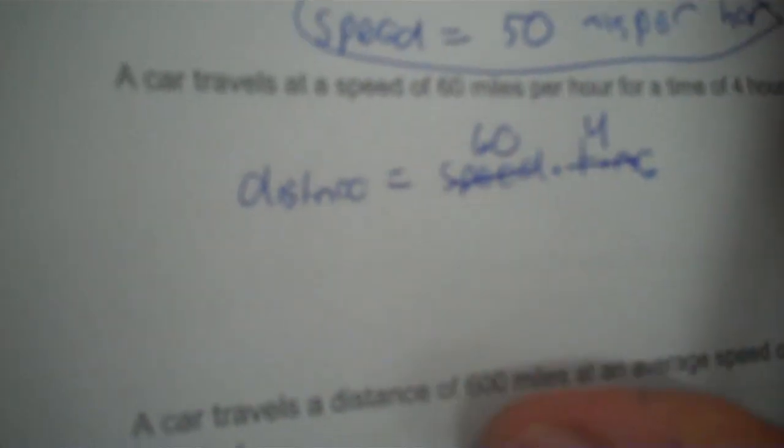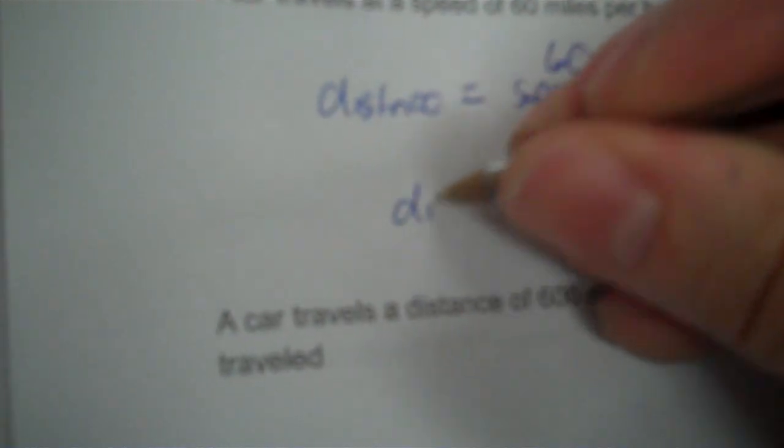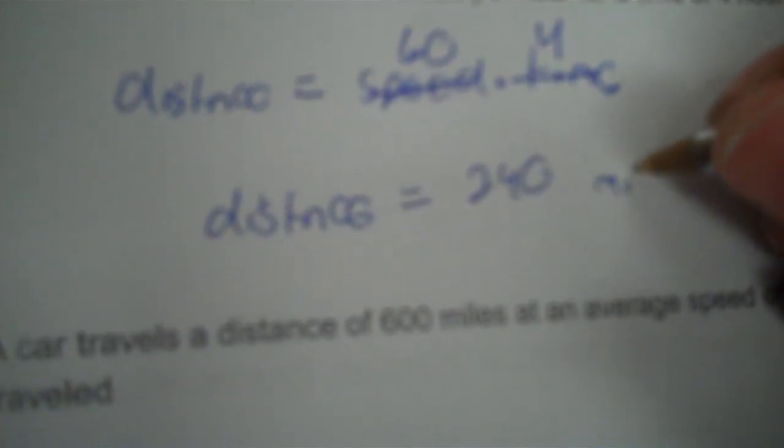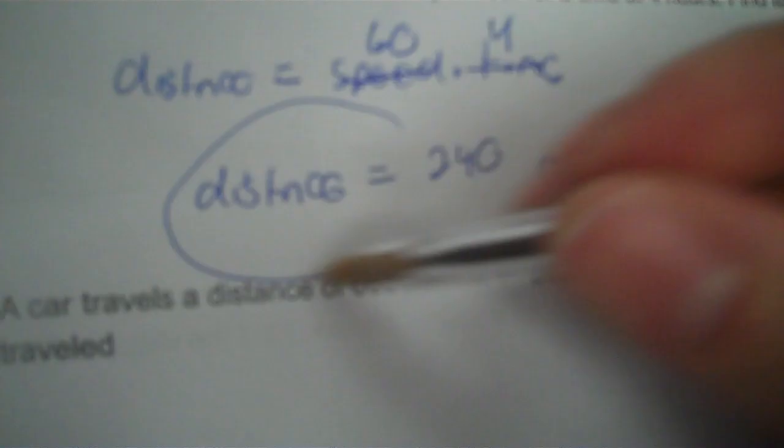A car travels at a speed of 60 miles per hour for a time of four hours — find the distance it travels. Distance equals speed multiplied by time. The speed is 60 and the time is four hours. 60 times four is 240. The label on distance is just miles — that's how many miles it traveled.